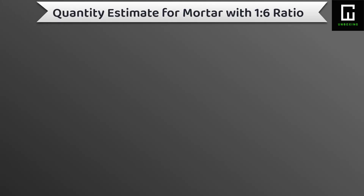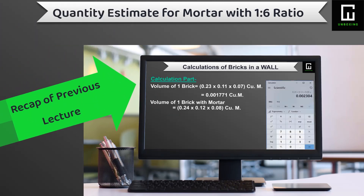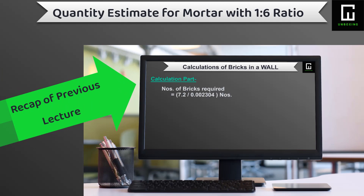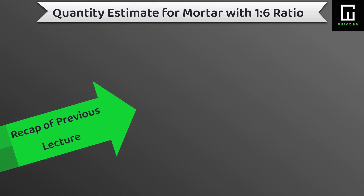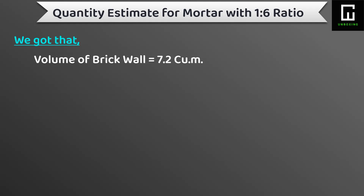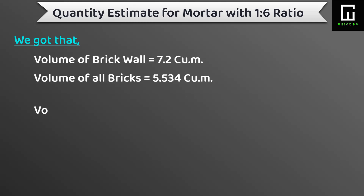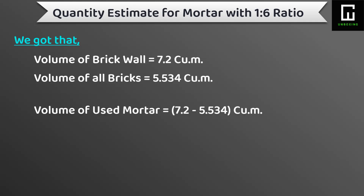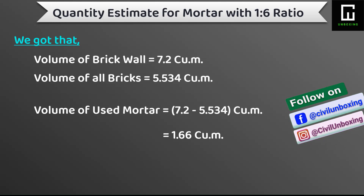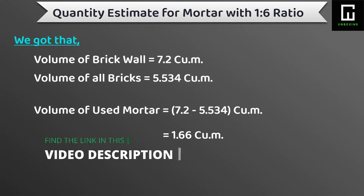First of all, we will take a tour of the previous video which was made on calculation of numbers of bricks in a 10-meter length of wall. In that video we got the total volume of the given brick wall with mortar as 7.2 m³ and total volume of all bricks as 5.534 m³. So now our intention is to find out the quantity of mortar only. For getting the mortar quantity, we subtract 5.534 m³ from 7.2 m³ and we get the mortar quantity which is equal to 1.66 m³.